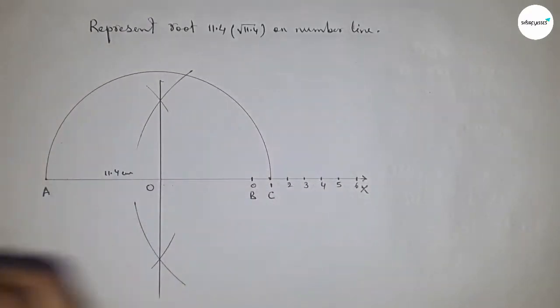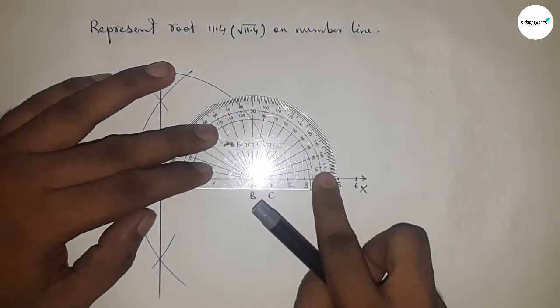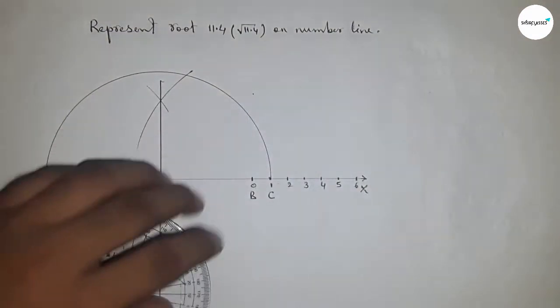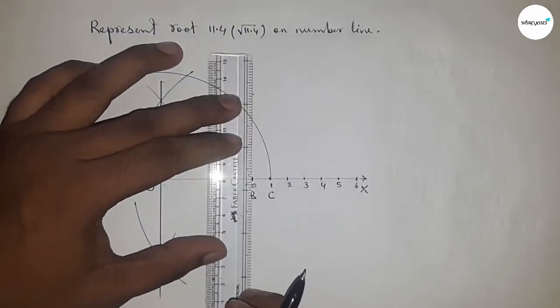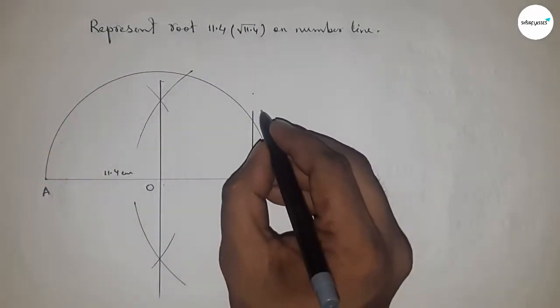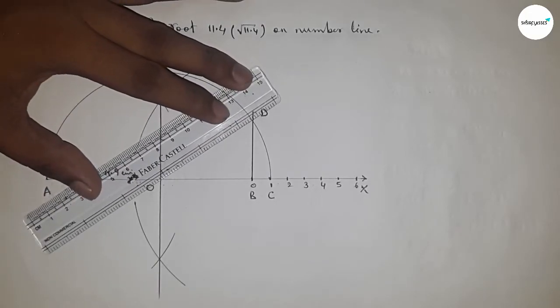Next, draw a 90-degree angle at point B using a protractor. Now join this to get a perpendicular line which meets at point D. Now join O and D.